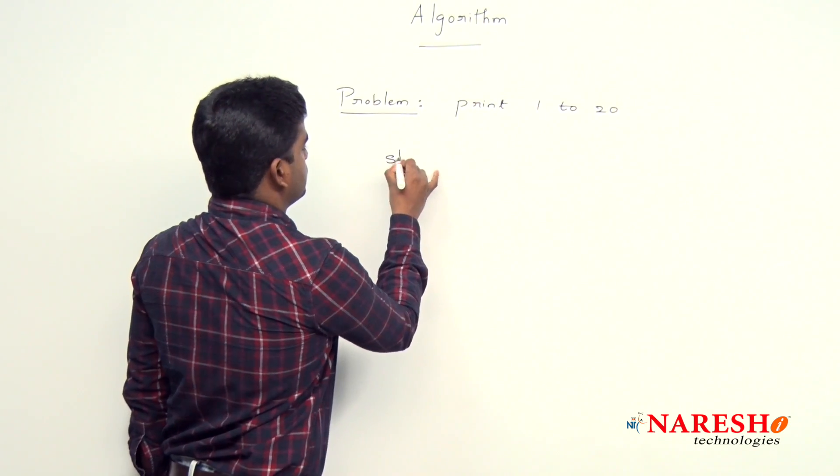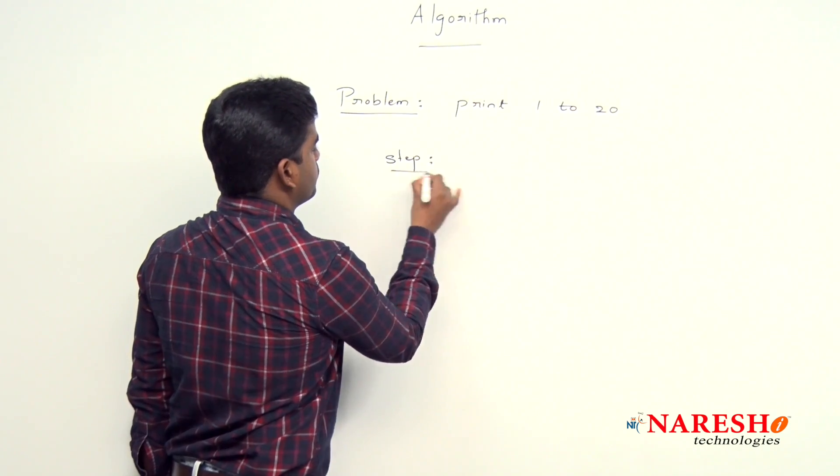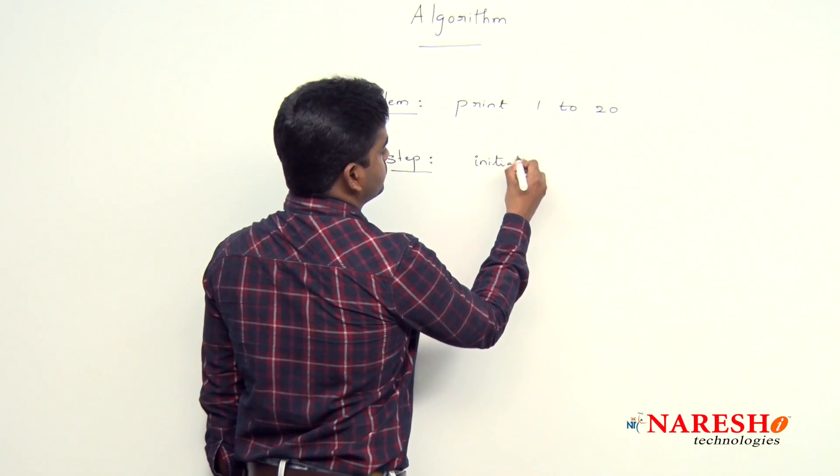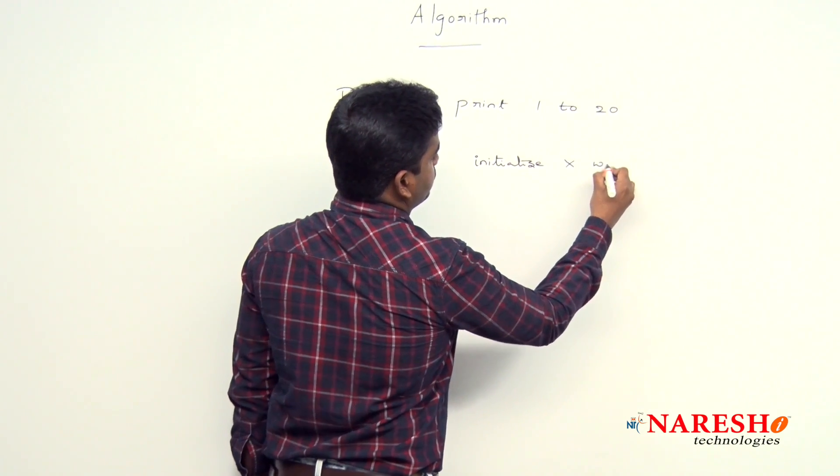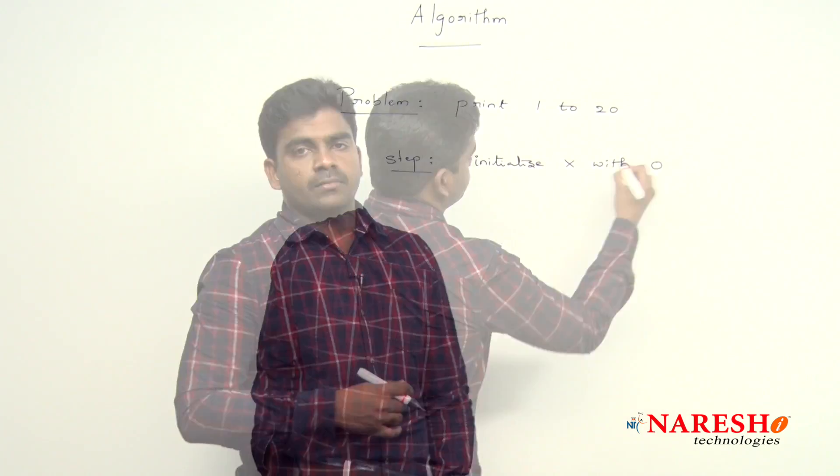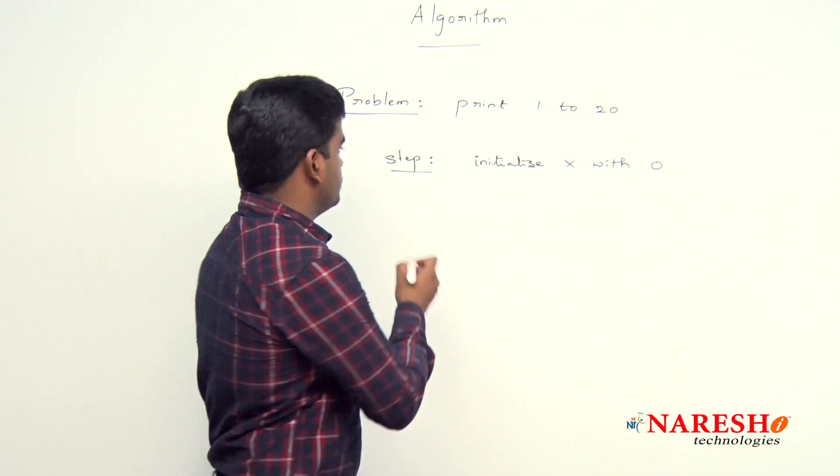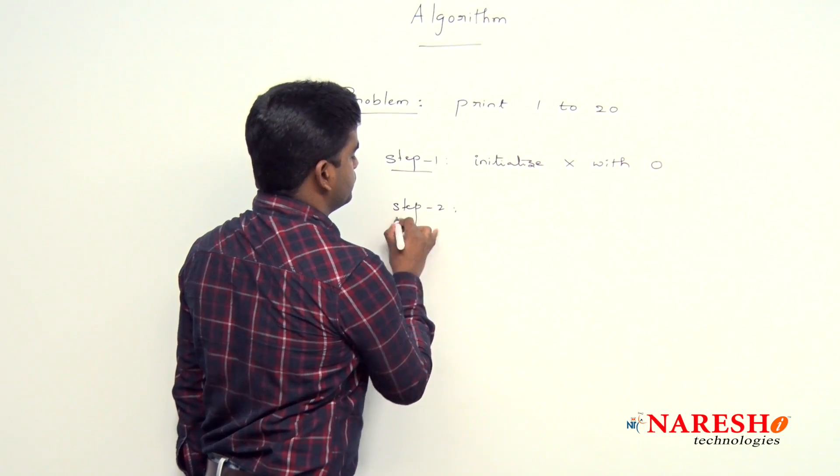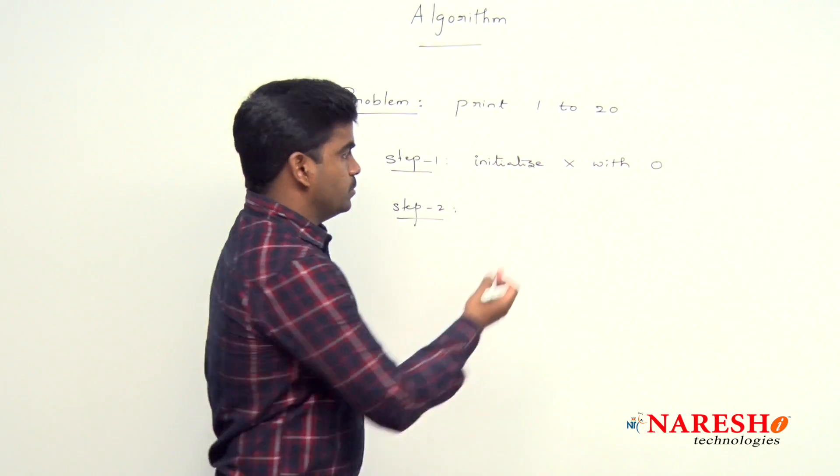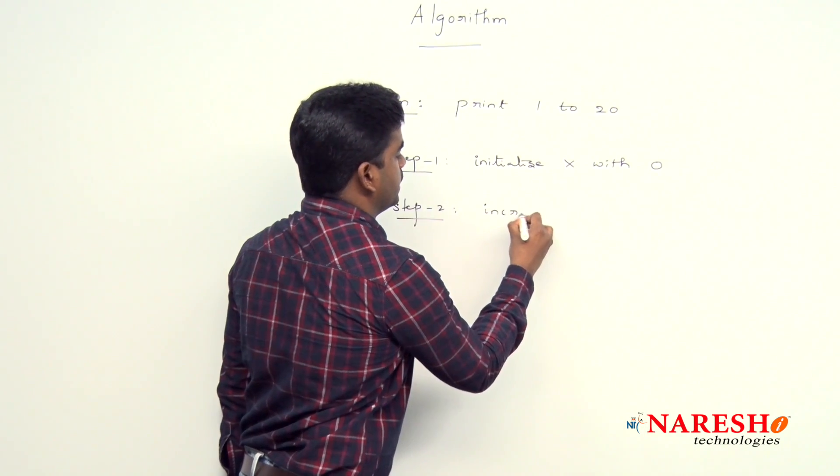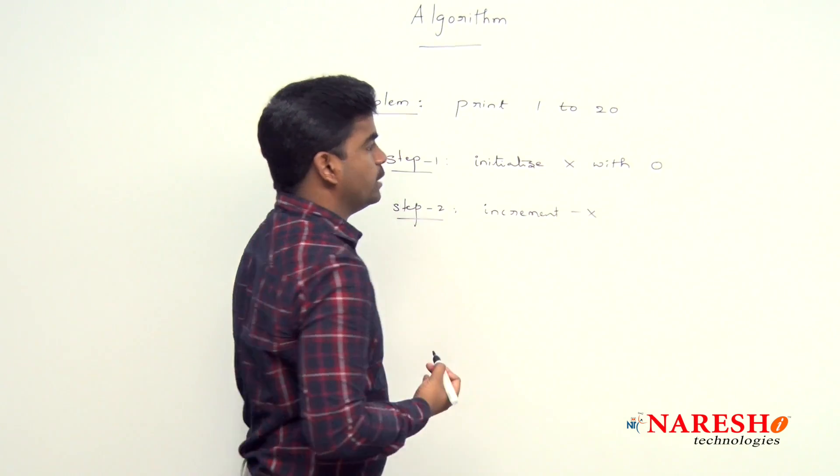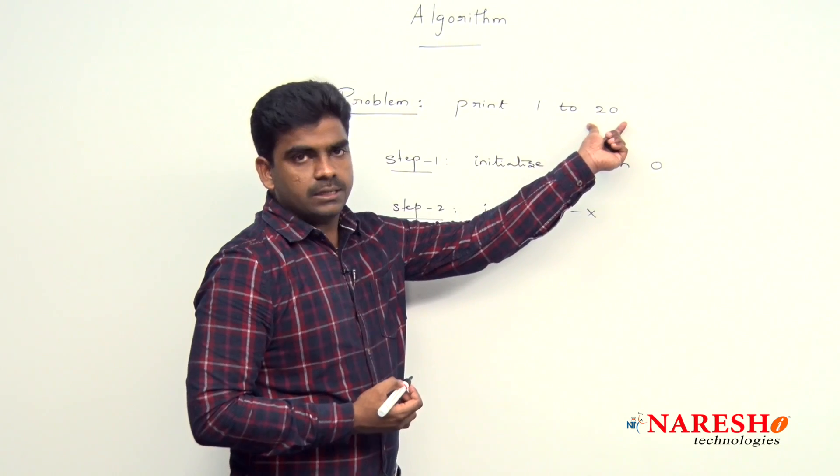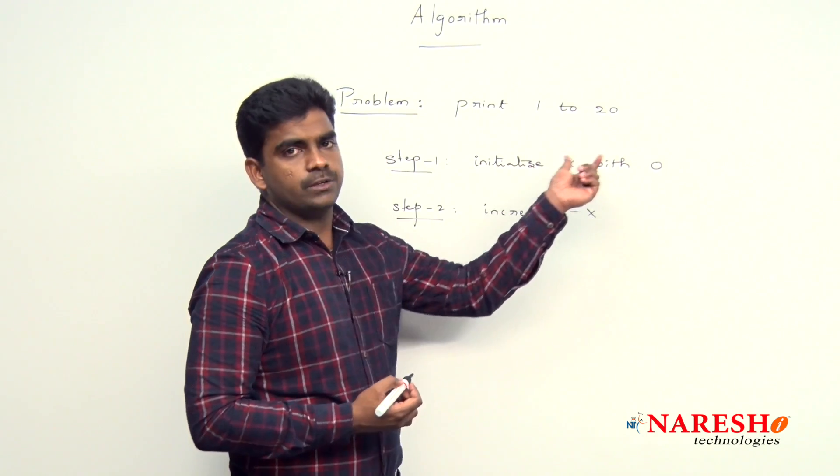Step by step procedure. Step 1: First take one variable and initialize that variable, initialize x with 0, initial value of x is 0. Step 2: increase the x value, increment x. So the value become 1. So here we just want to print the value from 1 to 20, or directly also you can initialize the value with 1.